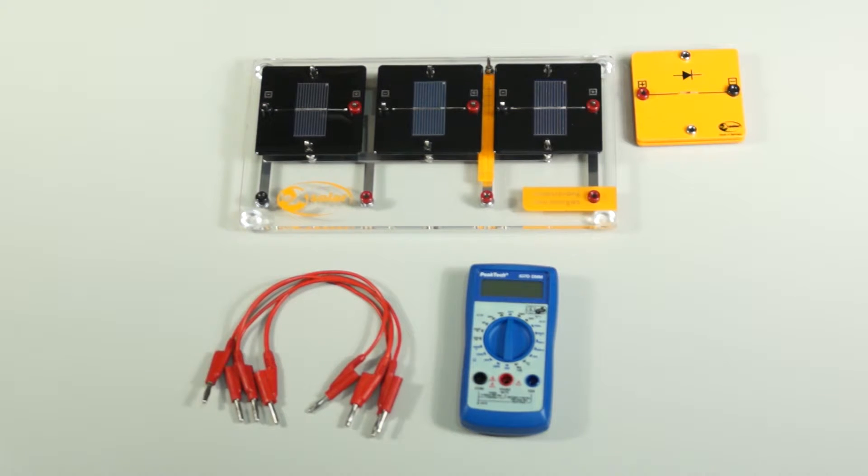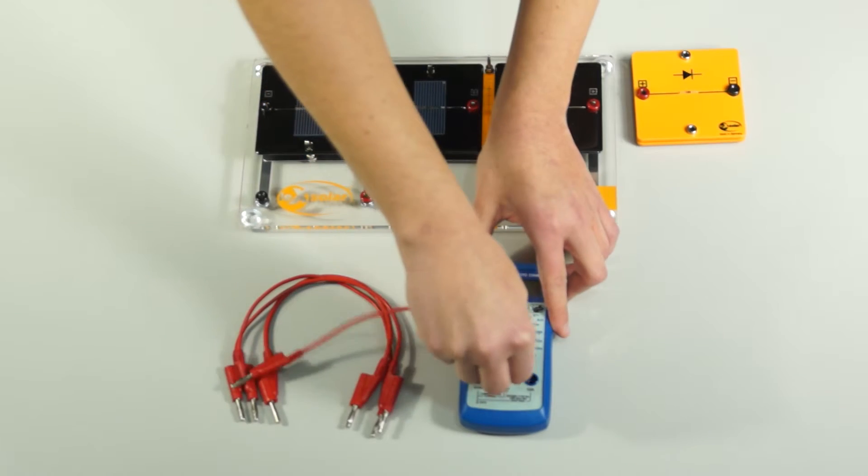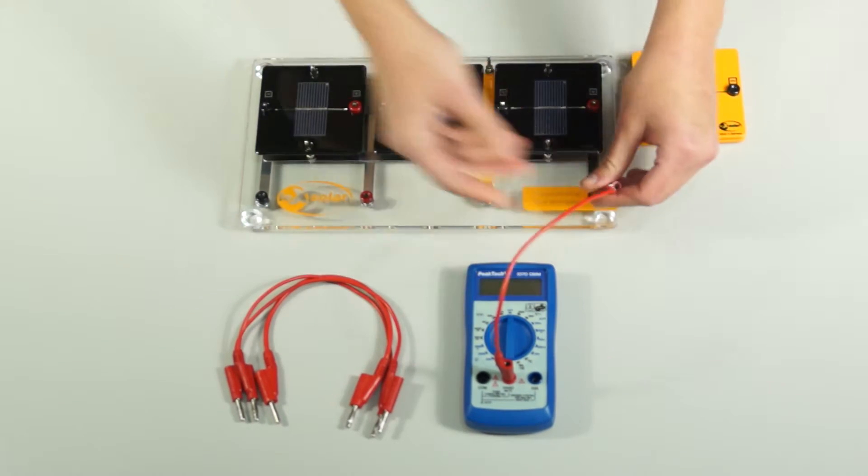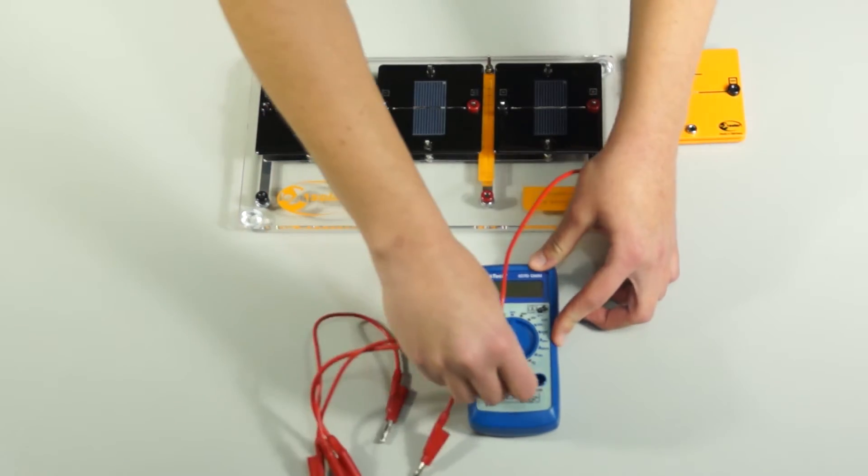After we have connected the solar cells, the multimeter is then connected. The multimeter is connected in series to the circuit because we want to measure the current flow through the solar cells.